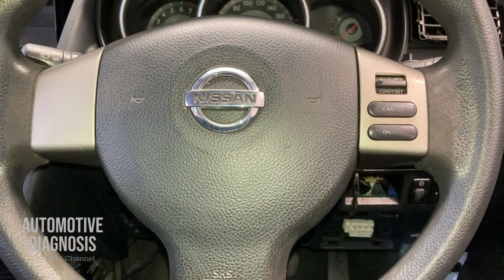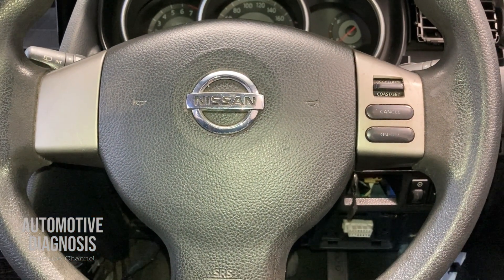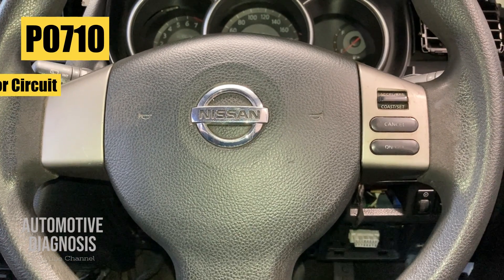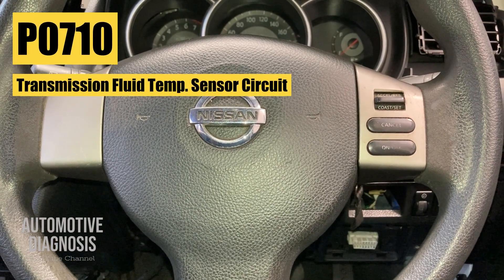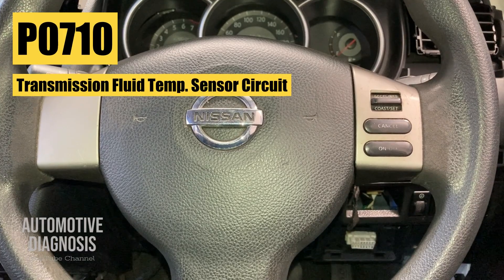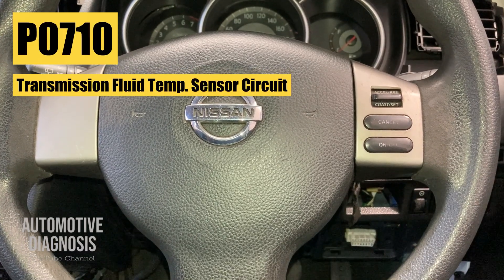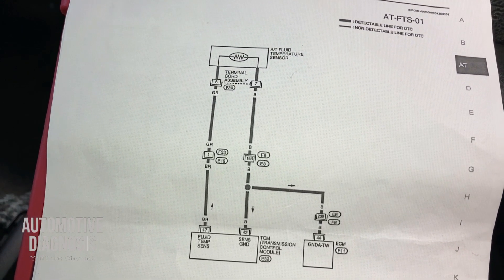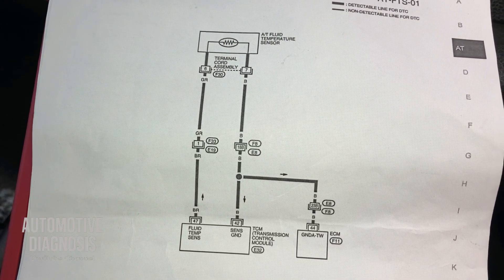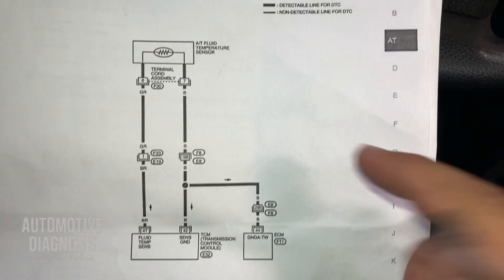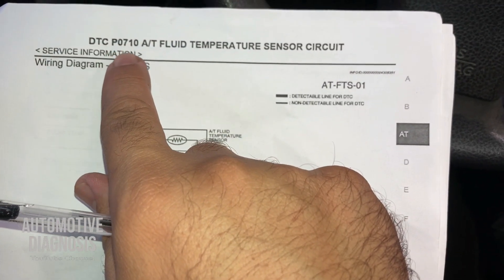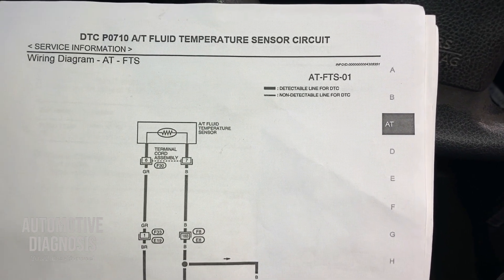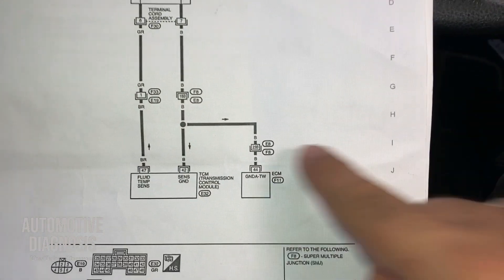Hey everyone, welcome back. In this video I'm going to show you how to diagnose your car if you have a P0710 fault code for automatic transmission temperature sensor. First of all, let's have a look at the wiring diagram. I'm looking at the workshop manual for P0710 diagnostics for ATF fluid temperature sensor circuit.